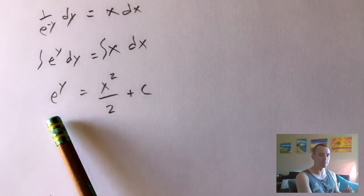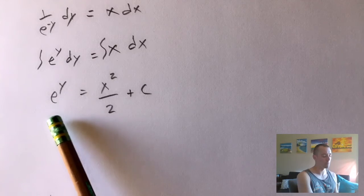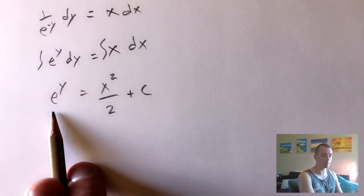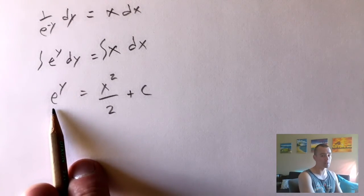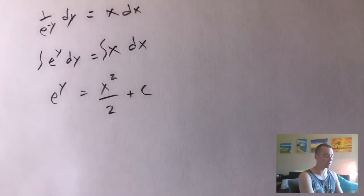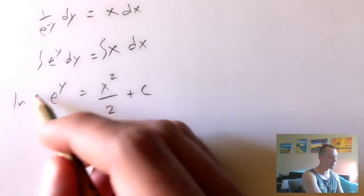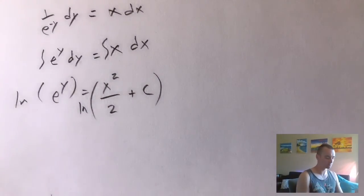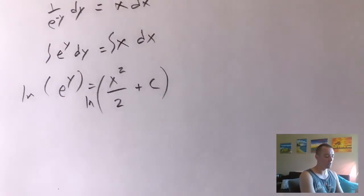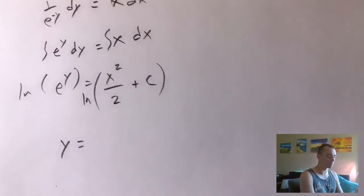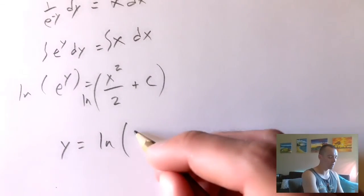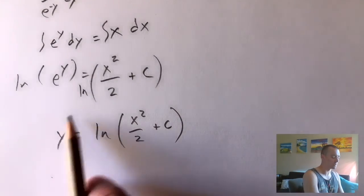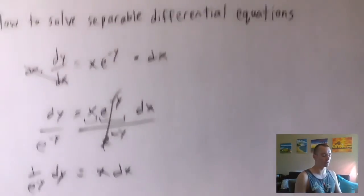The easiest way is to take the log with the base matching the base of the exponent. In this case, that's log base e — which is just the natural log — of both sides of the equation. The natural log and the e cancel on the left, and we're just left with y equals the natural log of x squared over 2 plus c. And now we've solved for y — this is the solution to our separable differential equation.